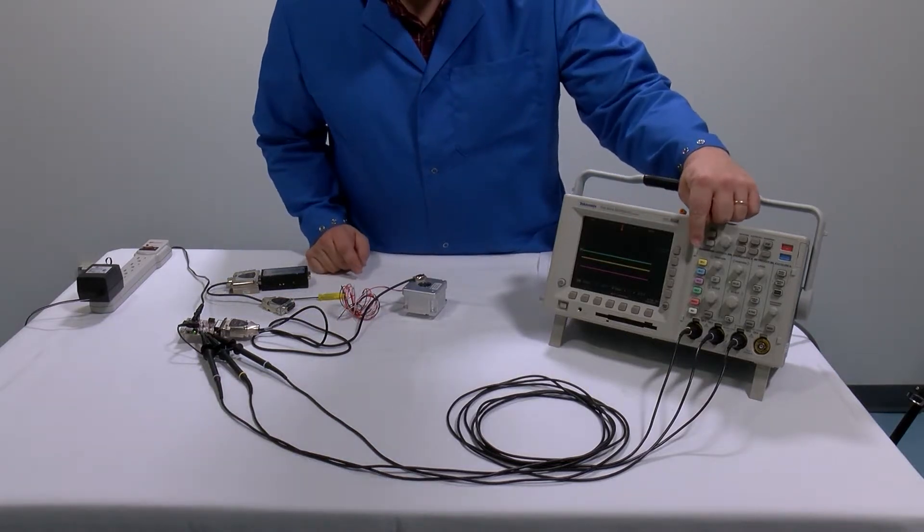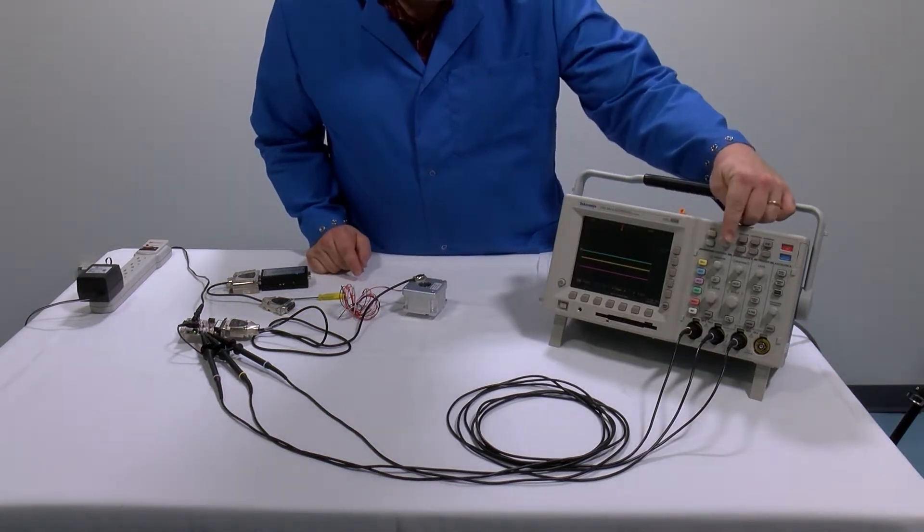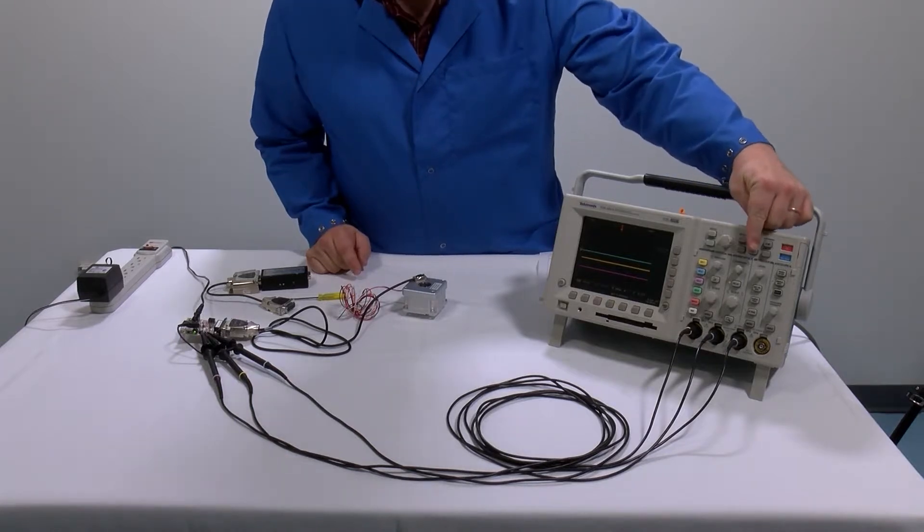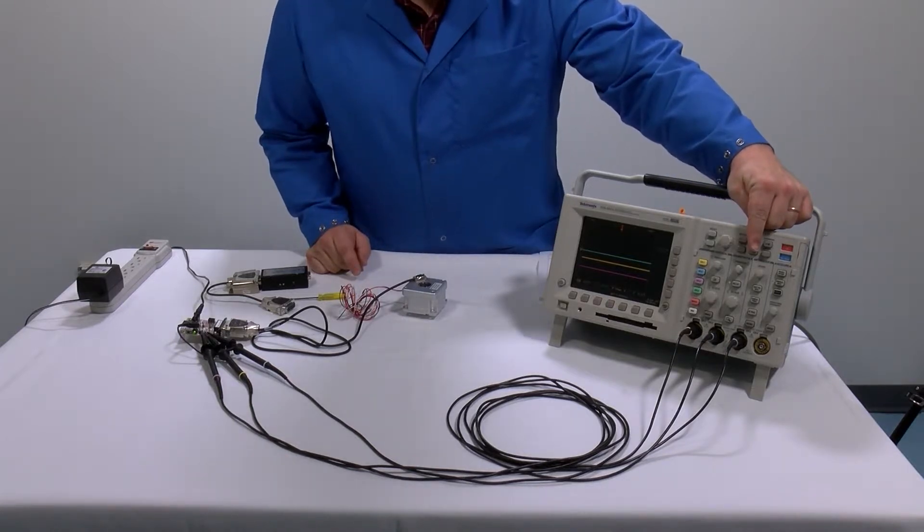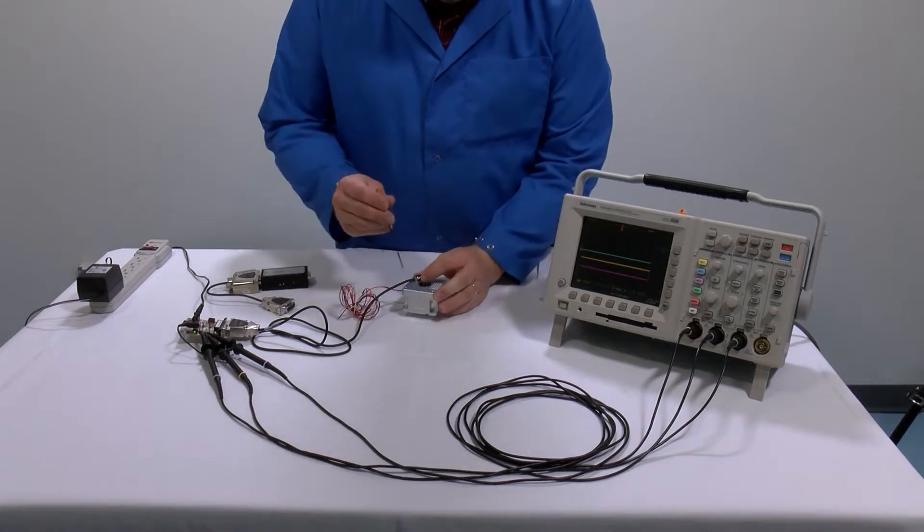I have sine on channel 1 of the scope, cosine on channel 2, and the index window on channel 3, and we are triggering on channel 3.